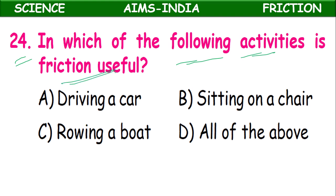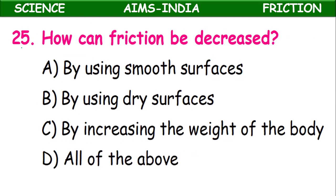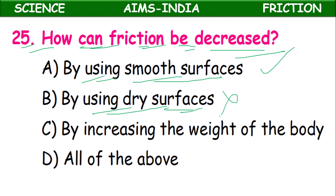Twenty-fourth question: In which of the following activities is friction useful — driving a car, sitting on a chair, rowing a boat? Driving a car: useful. Sitting on a chair: because of friction we can sit; without friction we would slip off. Rowing a boat: yes, desirable. So in all three cases friction is useful — all of the above. Twenty-fifth question: How can friction be decreased? By using smooth surfaces — correct. By using dry surfaces — wrong. By increasing weight — wrong. Answer: option A, smooth surfaces.